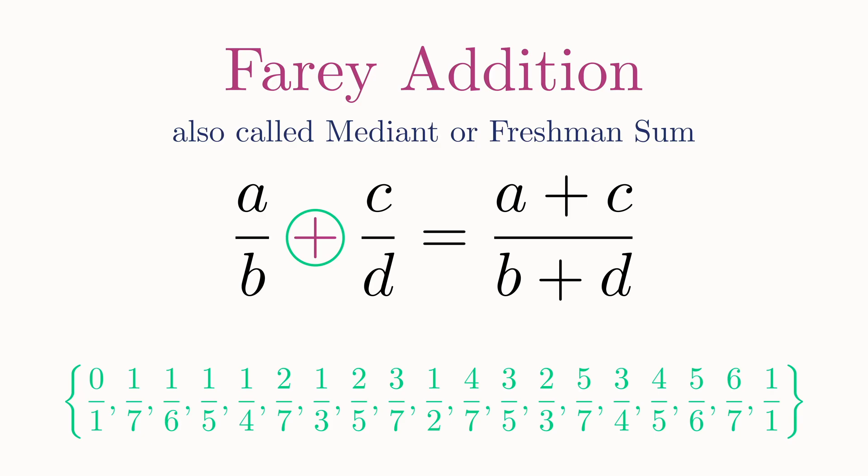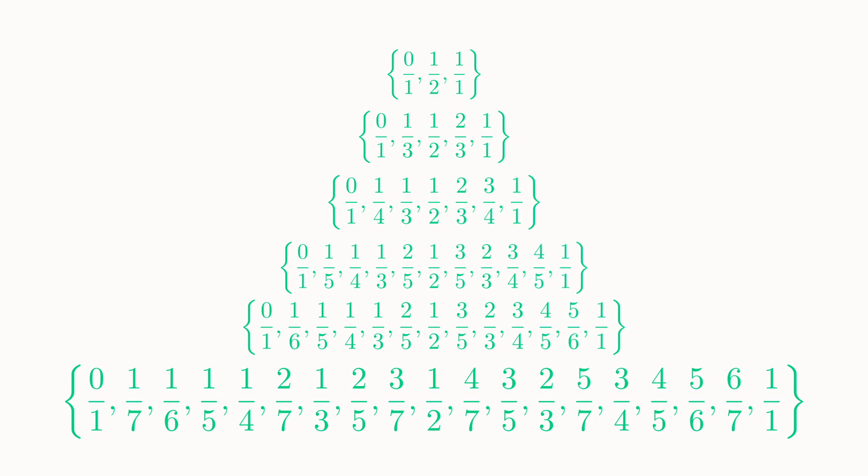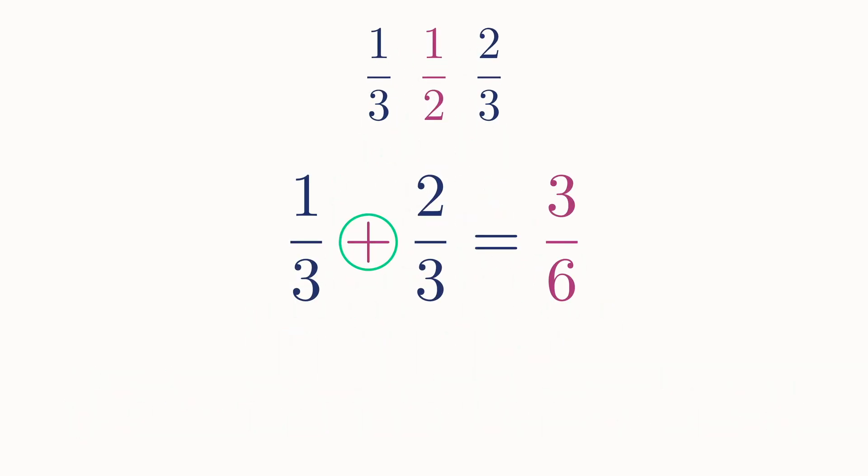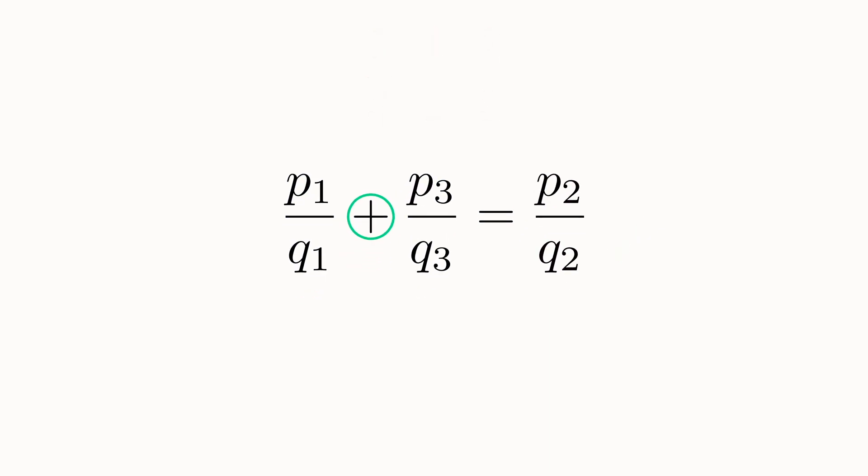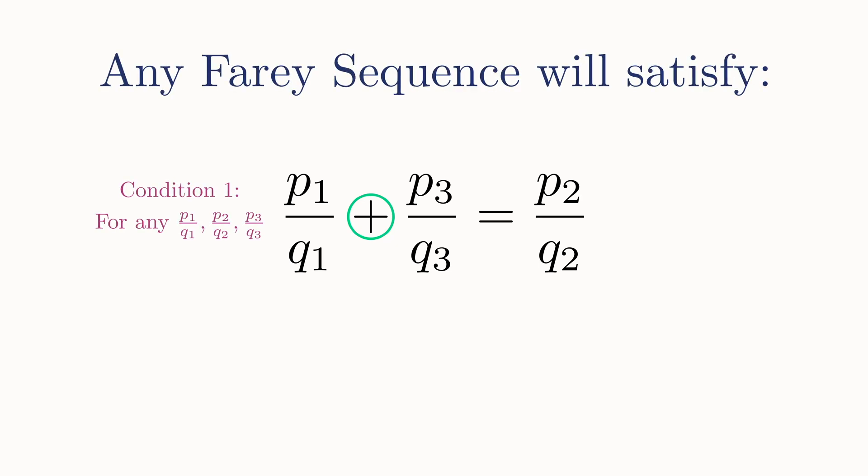Amazingly, this result occurs with every single number in any of these sequences. Pick any number, along with its two neighbors. The middle one will always be the mediant of the other two. If it isn't at first sight, you simply need to reduce the fraction to its lowest terms. So for any Farey sequence, no matter how long, any three neighboring points will satisfy this condition. An even more succinct way to capture this relationship is to use the fact that any two neighboring points will also satisfy this formula. So these two conditions are equivalent. Keep this result in mind, as it will reveal just how Farey sequences are related to Ford circles.